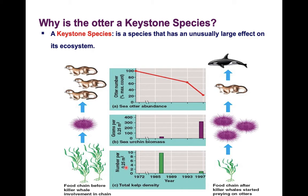What happens when you introduce the killer whale into this ecosystem? As you introduce the killer whale, the otter population starts to go down. As the otter population decreases, the sea urchin biomass starts to go up. And then the kelp density — kelp being an aquatic algae that grows on ocean floors — starts to decrease.